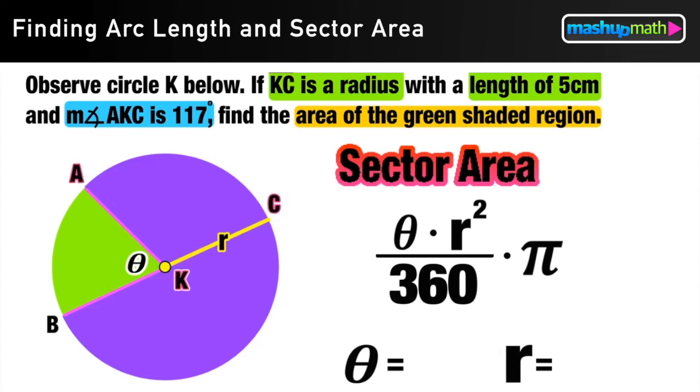We already were told that angle AKC has a measure of 117 degrees. However, that's not the angle that we want. But we should notice that angle AKB, the angle that we do want, is its supplement.